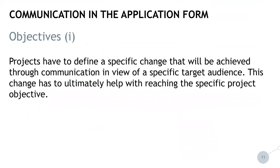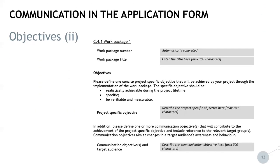In each work package, projects then have to define a specific change that will be achieved through communication in view of a specific target audience. This change has to ultimately help with reaching the specific project objective. One example for an objective could be to raise the awareness of five local mayors in participating project regions about project outputs that will help to foster circular economy in their regions.